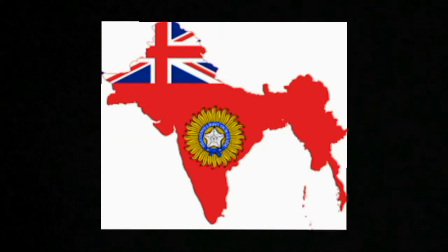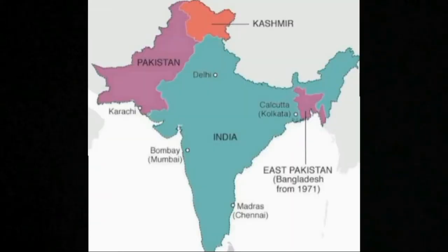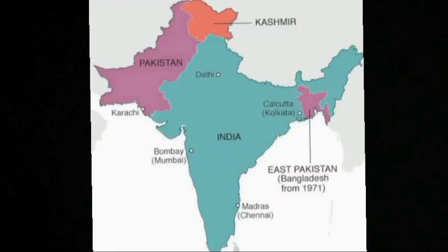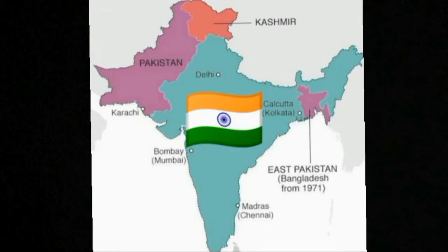The actual cause of this dispute is largely over land and resources. When the British left India, they designated land to both Pakistan and India. But other areas like Kashmir, which was a princely state under the British, were left undecided. The British left those regions to decide their own path — to either join Pakistan, join India, or become their own independent nation.